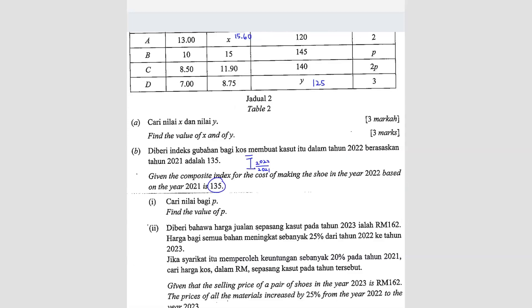We have the composite index. So the composite index formula is: 120 times 2 plus 145 times P plus 140 times 2P plus Y (which is 125) times 3, divided by all the weightages added together. So 2 plus P plus 2P plus 3, and this equals 135. When you combine the numerator terms: 240 plus 615 plus...